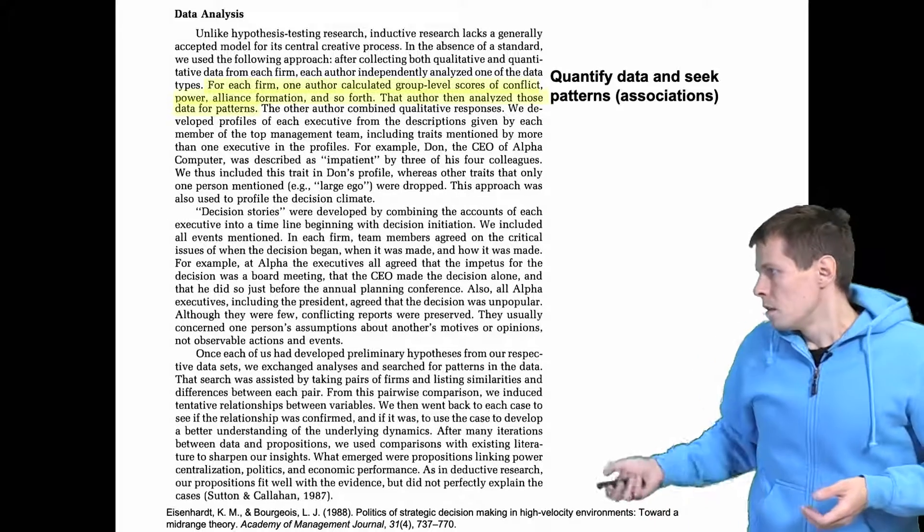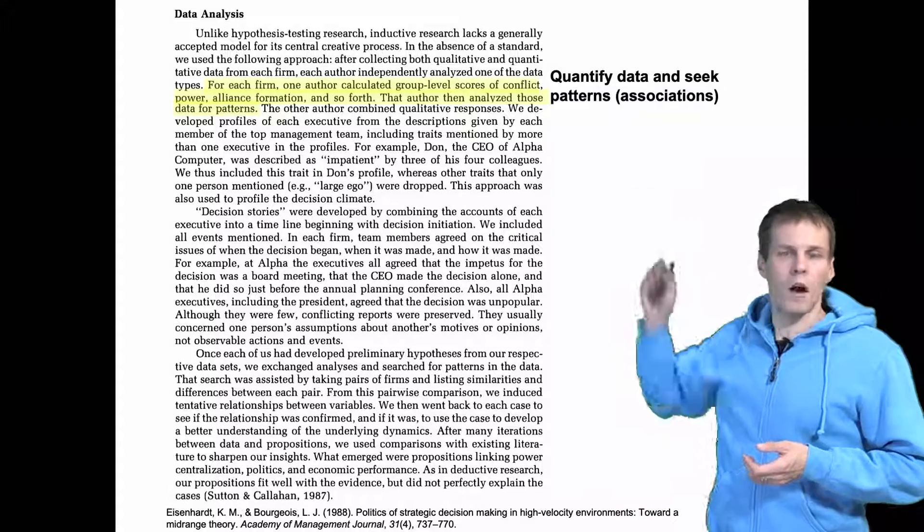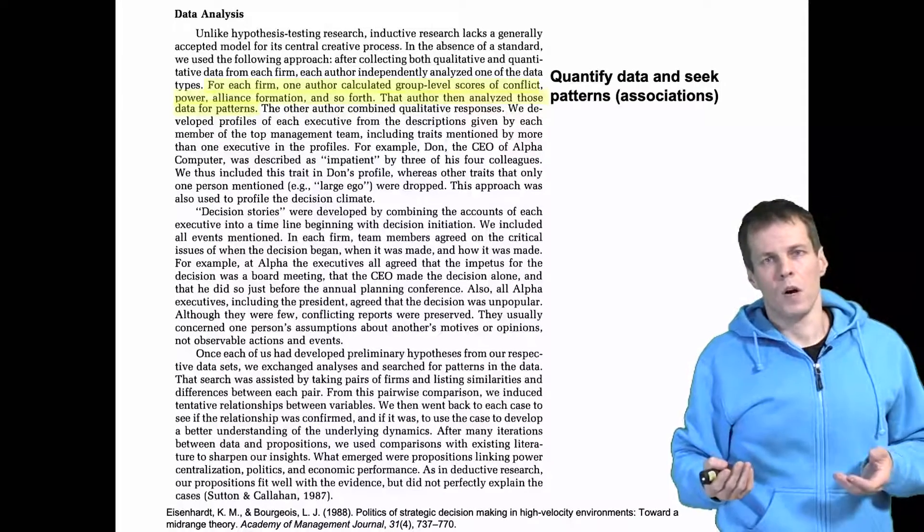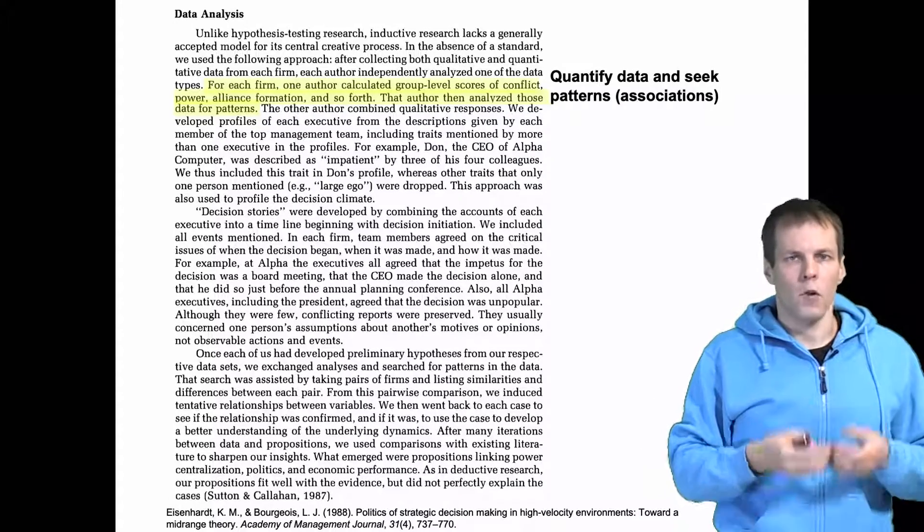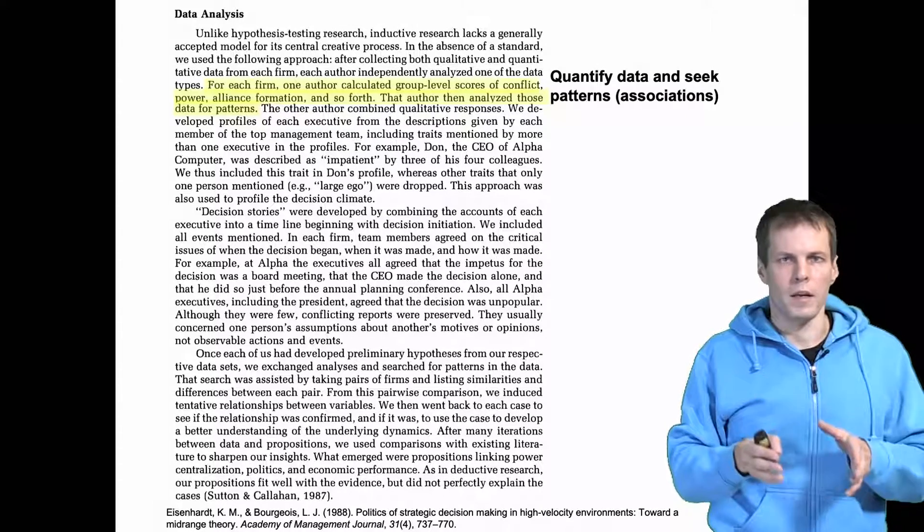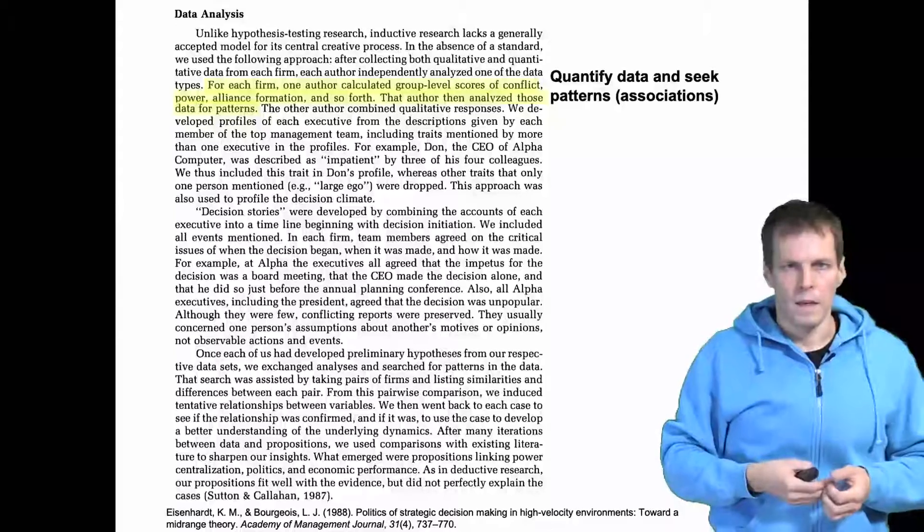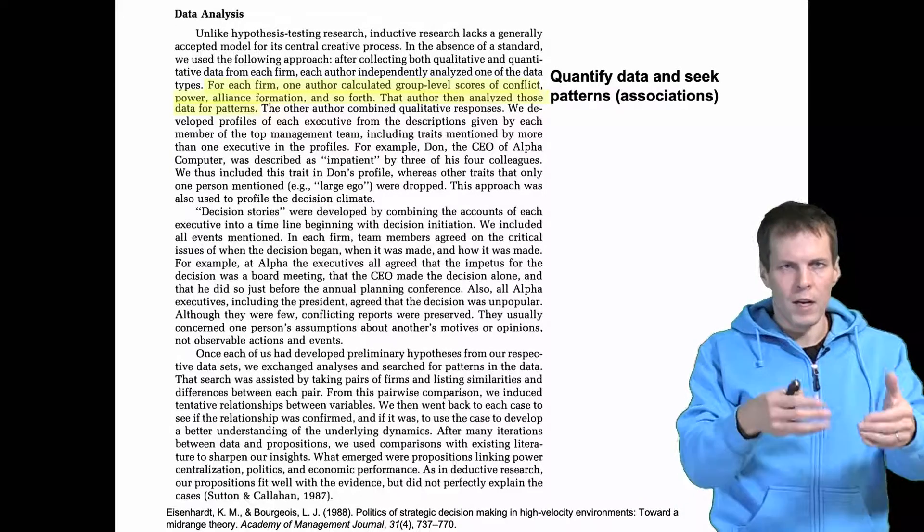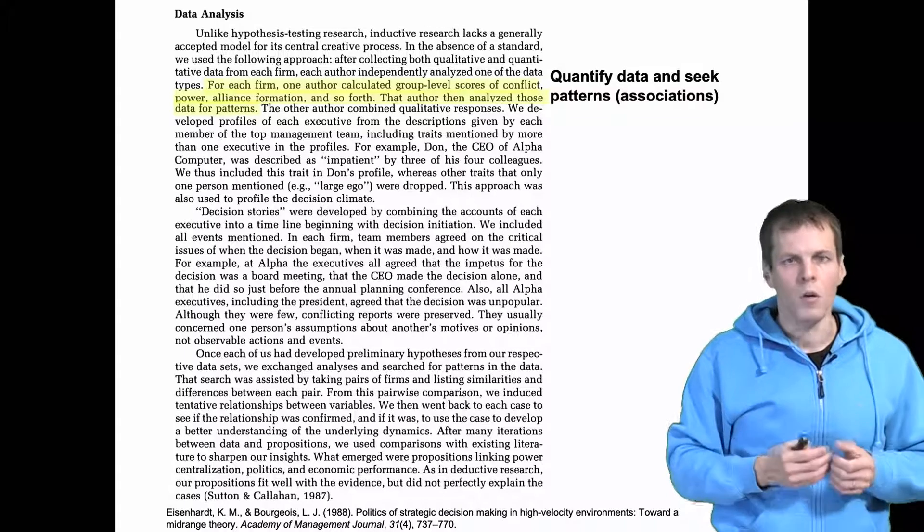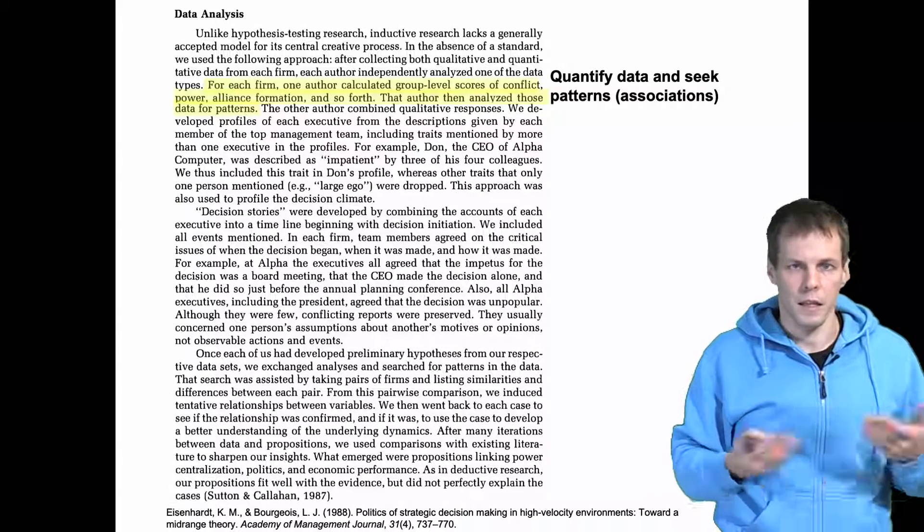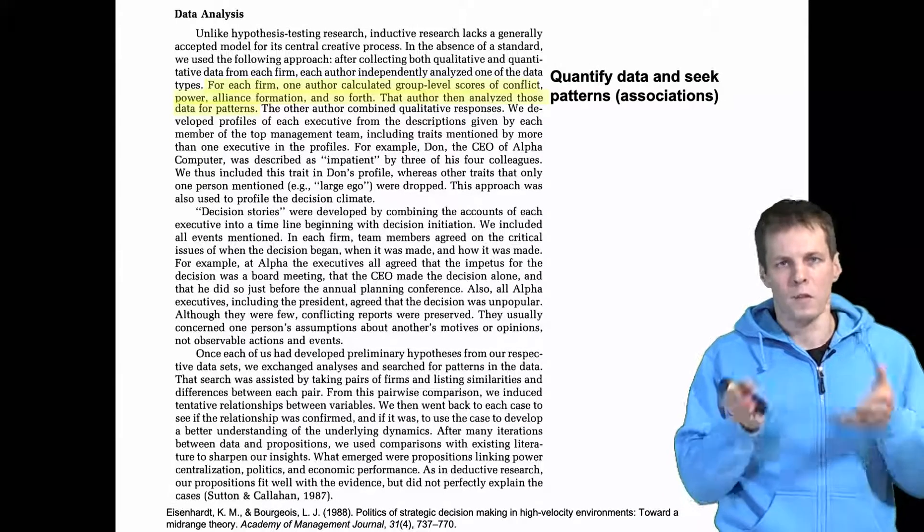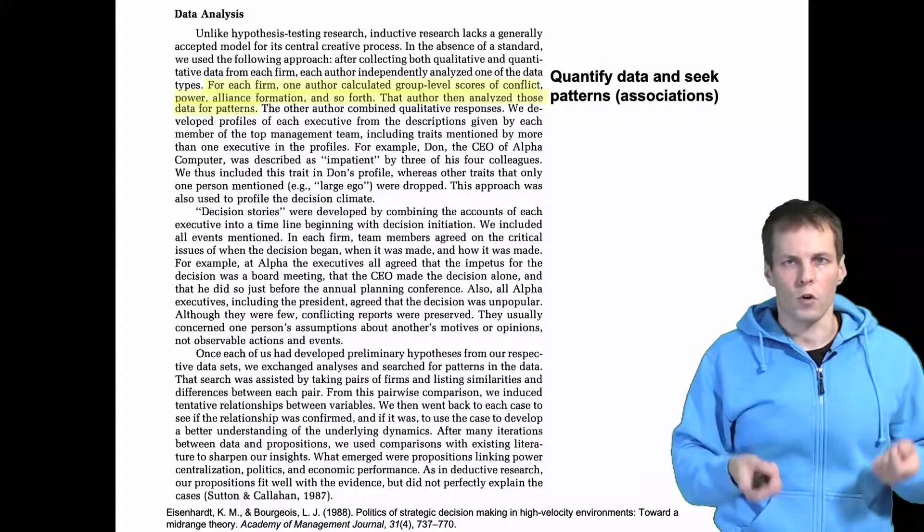So the data analysis starts by quantifying the data and seeking patterns. So quite often in multiple case study following the Eisenhardt approach you have some concepts in your mind before you collect the data and then you simply code for evidence of those concepts and different levels of those concepts. For example power and politics in this paper. When you seek associations between power and politics, are they correlated? If so, then you seek evidence for causality.